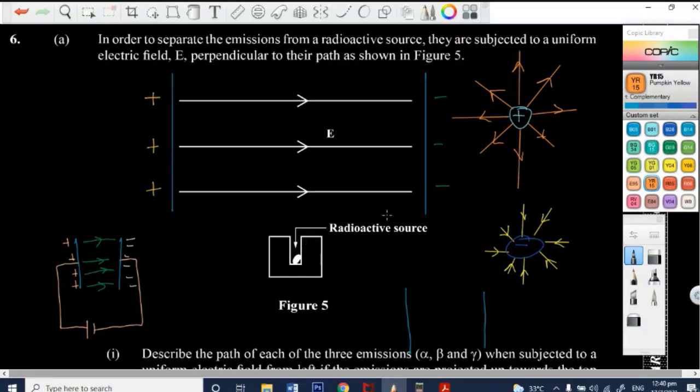So if we have an alpha particle shooting out of this, it's going to go like so towards the negative plate. So this is our alpha particle. Right? Yep.